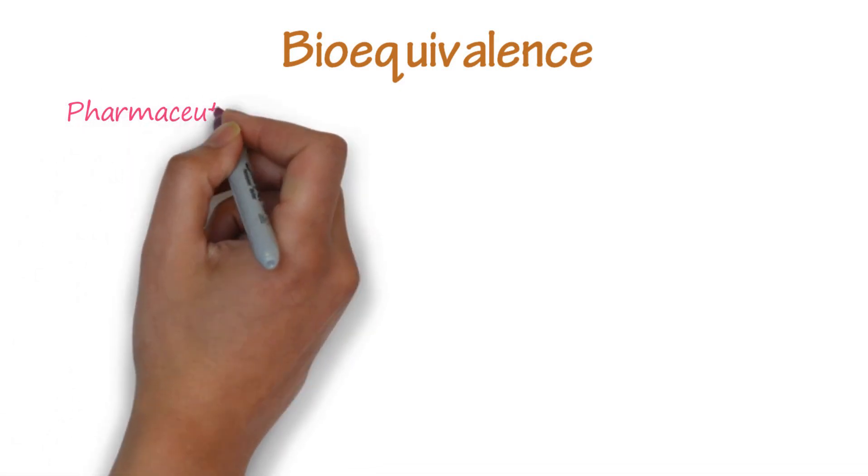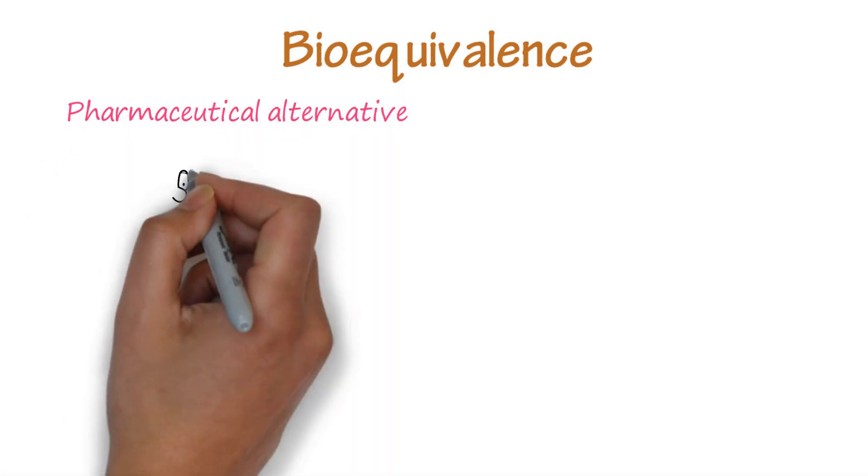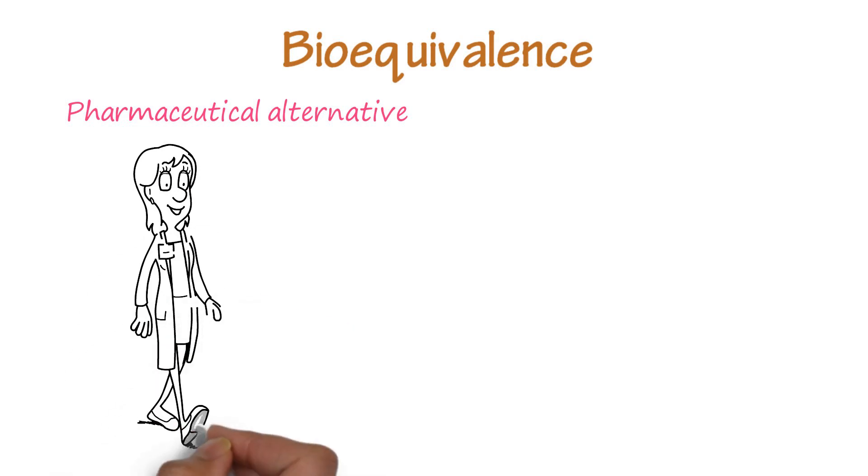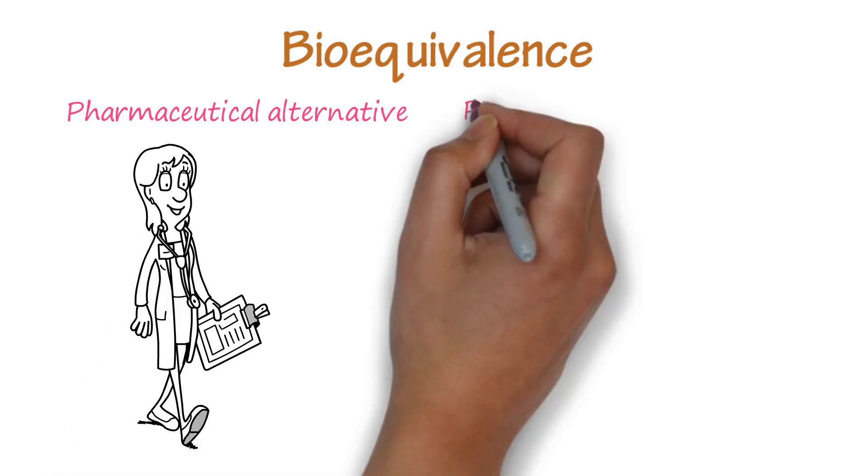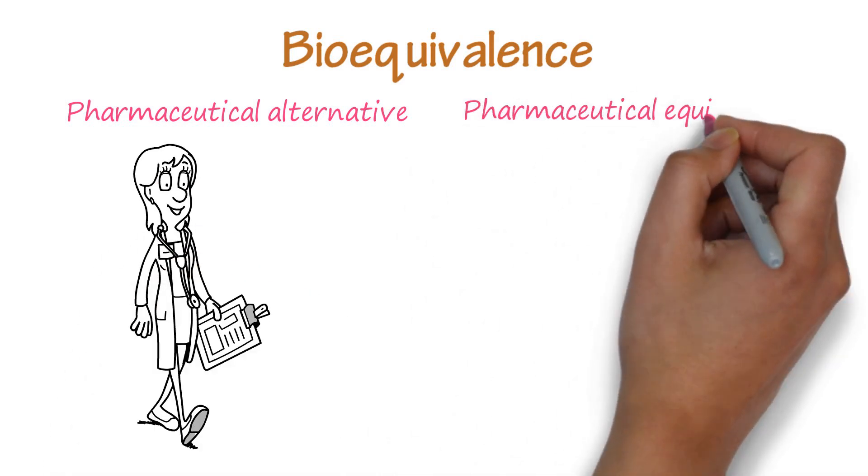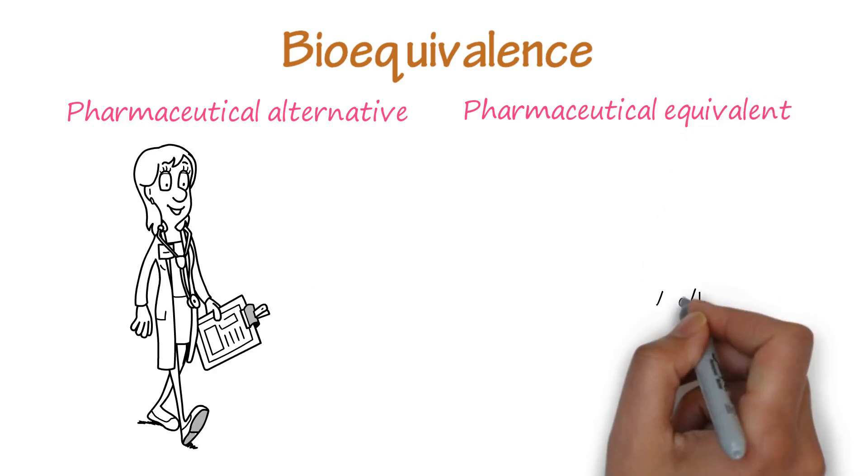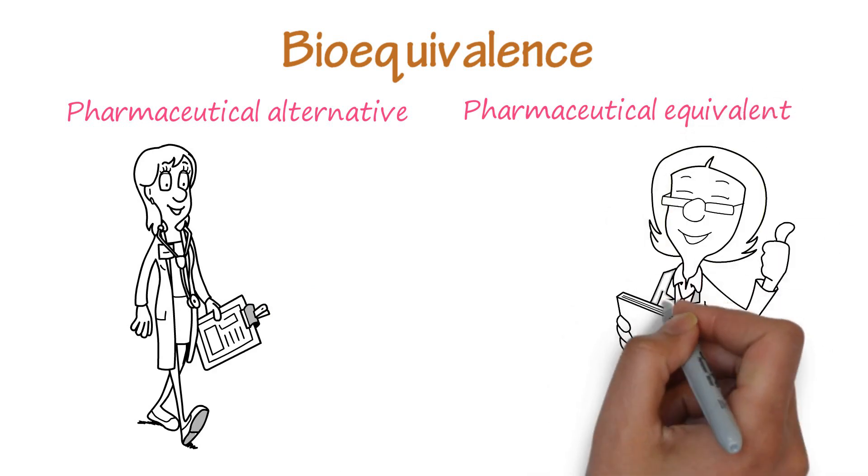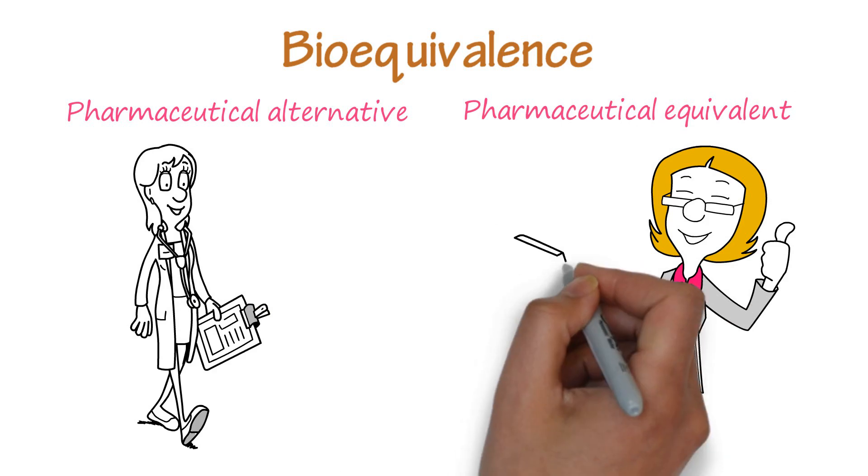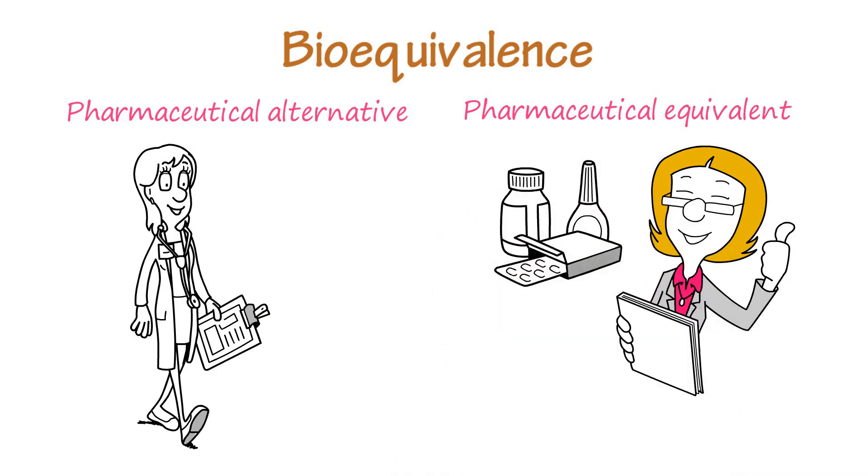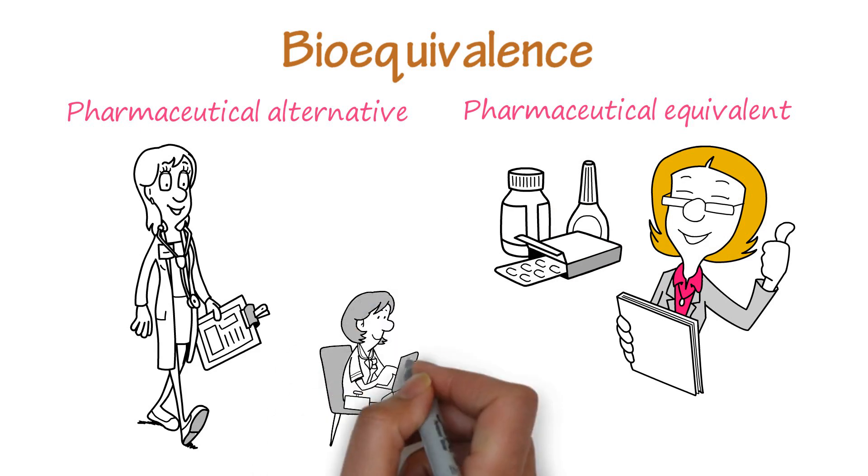Bioequivalence is the comparison of bioavailability between two dosage forms. Pharmaceutical alternatives are drug products that contain the same active ingredient but not the same salt, amount, or dosage form. Pharmaceutical equivalents are drug products that contain identical amounts of the same dosage form. Therapeutic equivalents are equivalents that produce the same effects in patients.